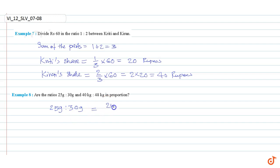equal to 25 divided by 30, equal to 5 into 5 divided by 6 into 5, which is equal to 5 by 6.